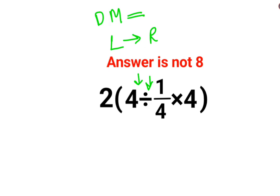So 4 divided by 1/4. We have 4 divided by 1/4 multiplied by 4. This needs to be done first because this is belonging to the bracket, and in mathematics we know that the bracket holds highest precedence.